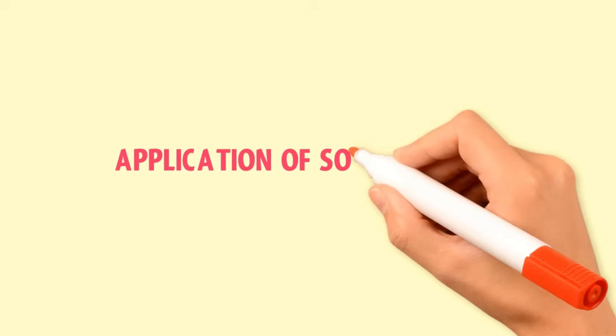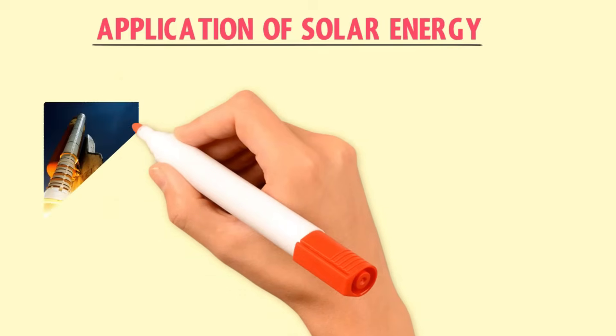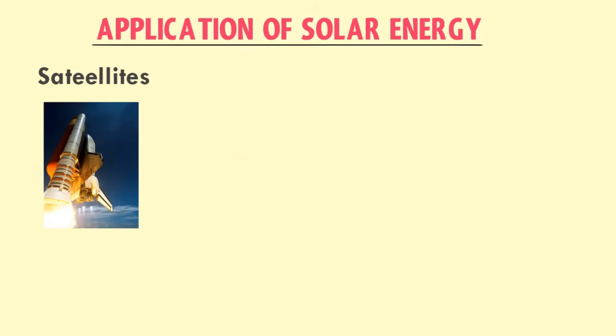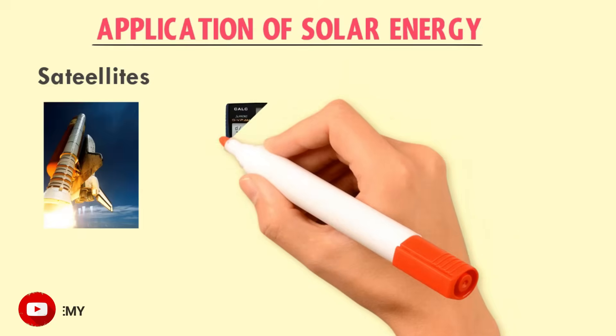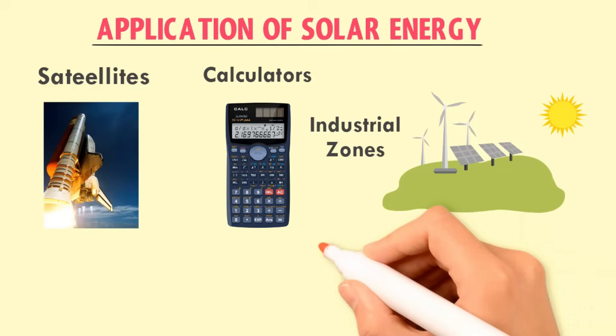At last, let me teach you some applications of solar energy. Solar cells are used to power satellites having large solar panels which are kept facing the sun. Solar watches and solar calculators are also in use nowadays. Solar energy is used in industrial zones for power generation. Solar energy provides electrical energy to tube wells. Nowadays, different developed countries have introduced cars that are completely running on solar energy.